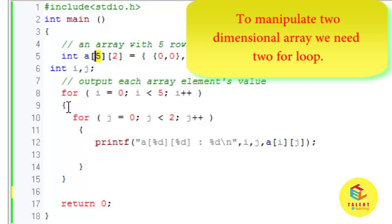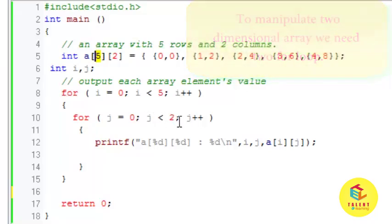Again in that for loop we are writing one more for loop which will access the column of array. So we have started j is equal to zero and we are running that for loop for two times. Means we are putting the condition j less than two.